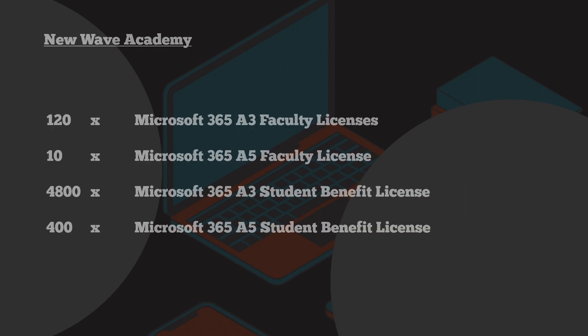Looking at this from an advanced angle, let's look at New Wave Academy and the additional 20 users that might still need to use some Office 365 A1 license features, such as Teams in the browser or Office in the browser. As mentioned earlier they had 150 staff. Because those 20 don't need to use a Windows machine, they don't need the Windows license as part of Microsoft 365 A3 or A5 — we can still put them onto the Office 365 A1 faculty license, the free one that's available.